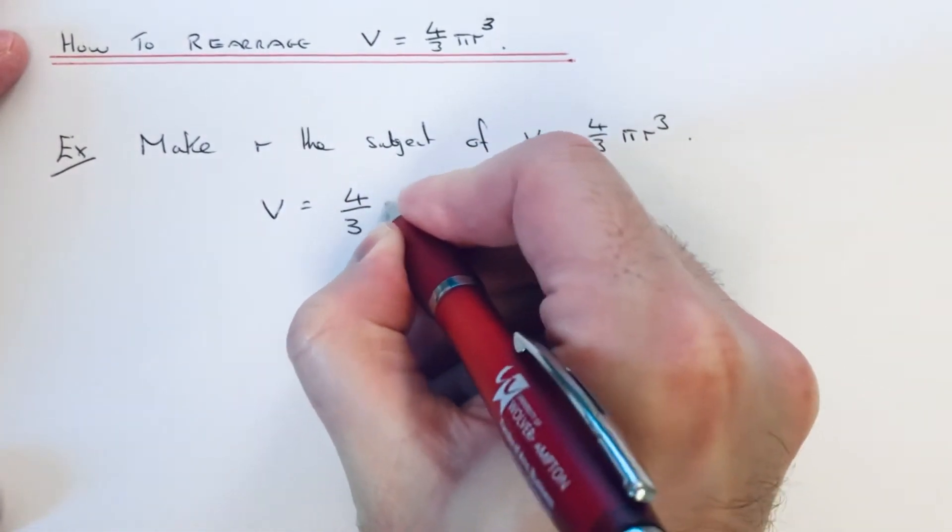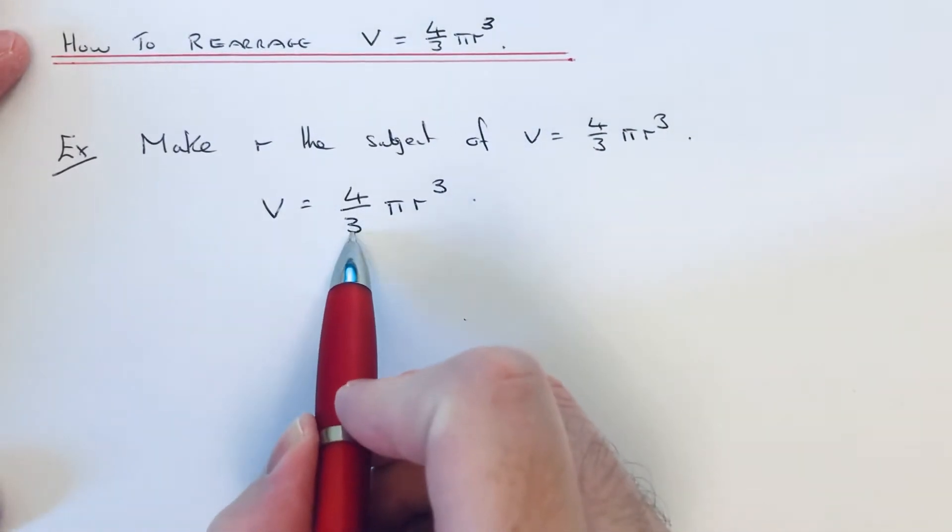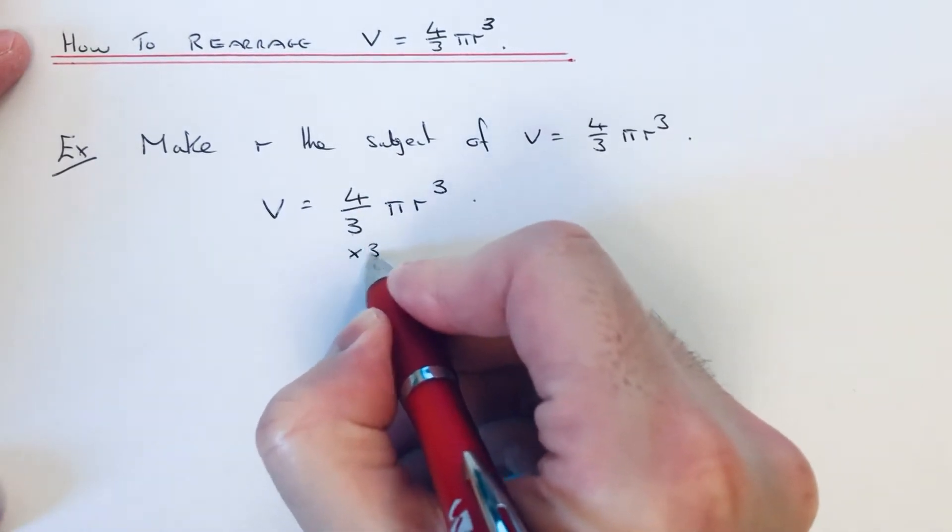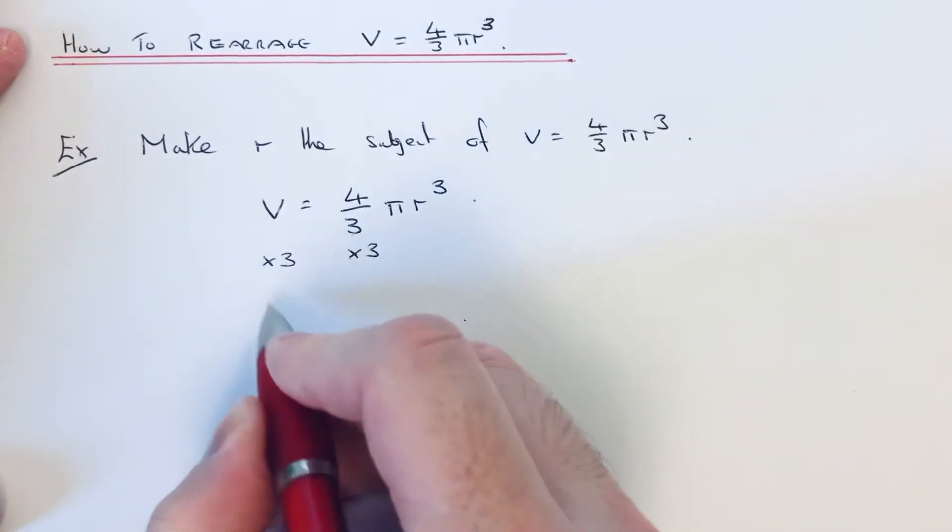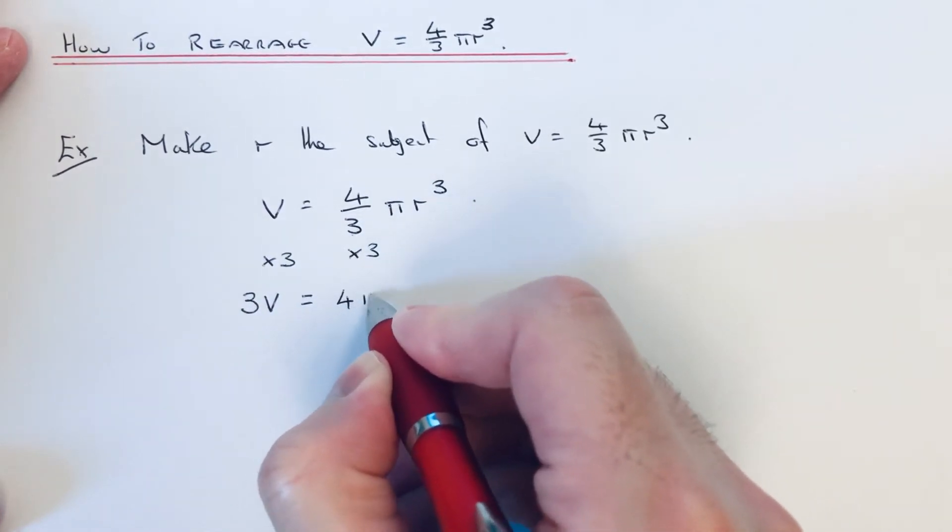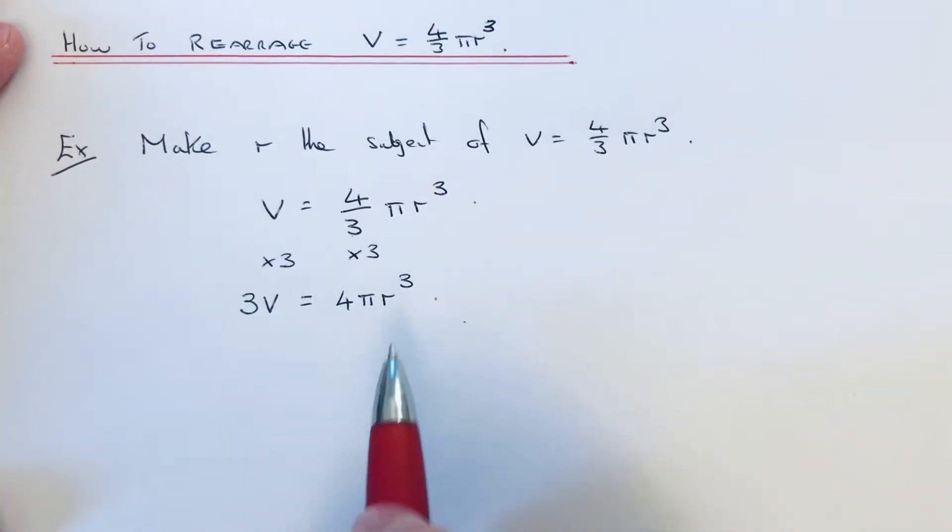Okay, so first of all I'm going to get rid of the three on the denominator by multiplying both sides by three. So this will give 3V = 4π r³. Then r³ is being multiplied by 4π.